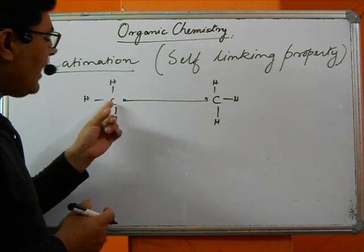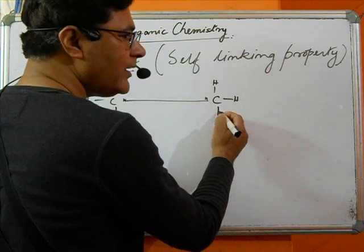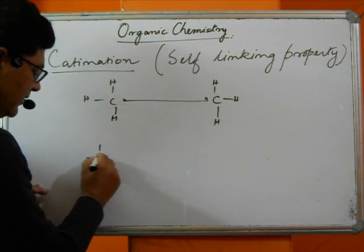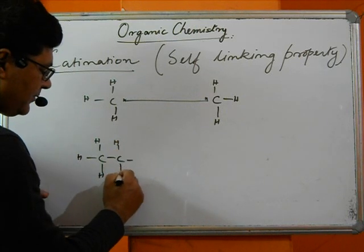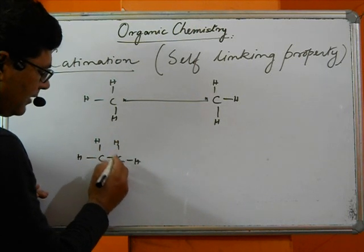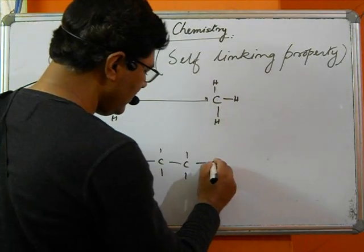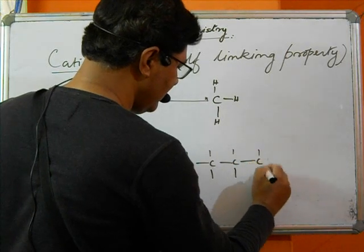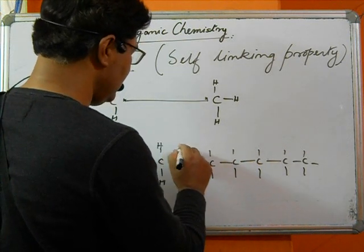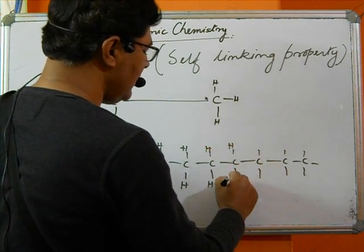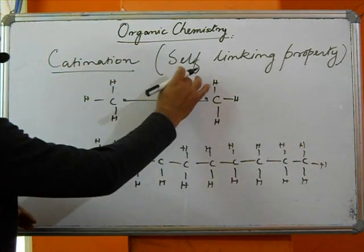Please remember: carbon has four arms. One carbon links with another carbon, which links with another carbon, and so on. Each carbon has four arms — if hydrogens are not available, another carbon attaches. This continues, and you can see the long chains that are formed. This is what is very unique in carbon — it forms long chains because of the self-linking property, because of catenation.